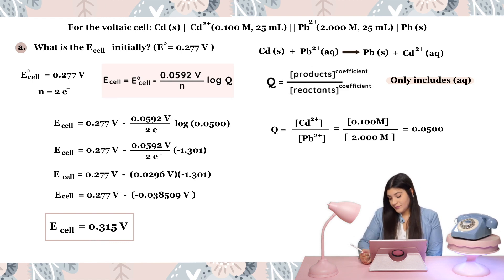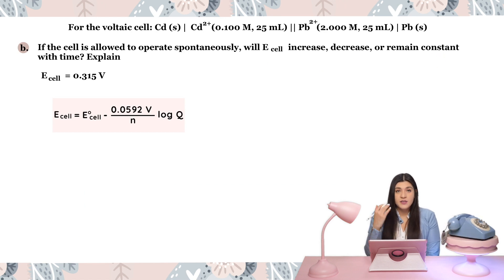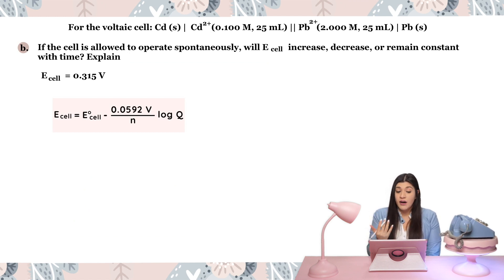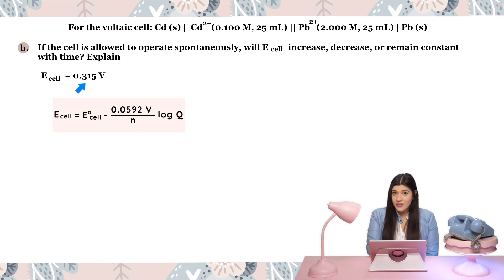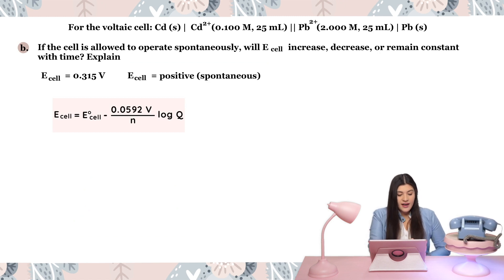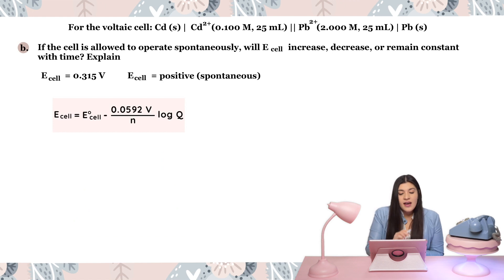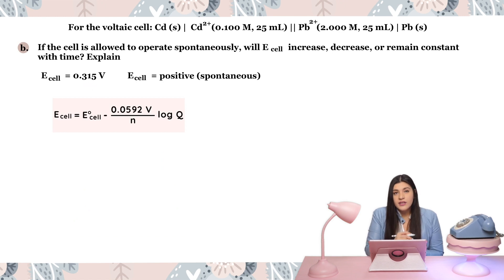Now let's go on to Part B. It's asking: if the cell is allowed to operate spontaneously, will E of the cell increase, decrease, or remain constant with time? One thing to note is the value of E of the cell we just calculated was positive. That's really important — a positive E of cell means it's spontaneous. If E of cell were negative, it would be non-spontaneous. Because it is positive, I know the reaction is going to keep going.